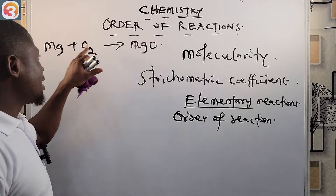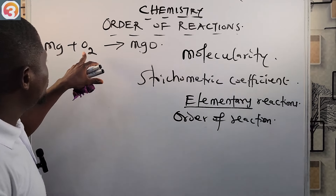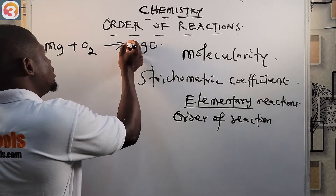Let's see an example of an elementary reaction: magnesium reacting with oxygen O₂ to give magnesium oxide MgO. As you can see, this equation is not balanced — we have one atom of magnesium and two atoms of oxygen on the reactant side, but only one atom of magnesium and one atom of oxygen in the product.